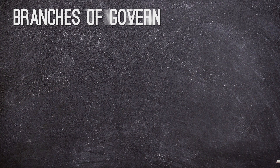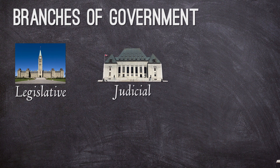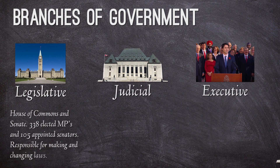In Canada the three branches of government are the legislative, the judicial, and the executive. The legislative branch is our parliament federally and the different legislative assemblies provincially. This is made up of the MPs we elect, because we have what's called a representative democracy — we elect people to make decisions on our behalf so that we don't have to make decisions on every single new law or new idea that needs to pass.